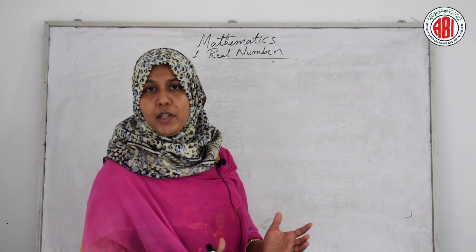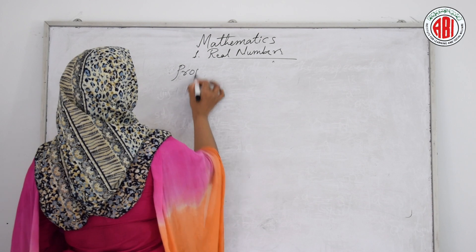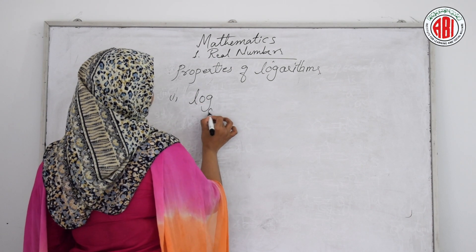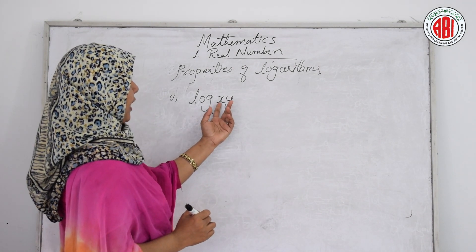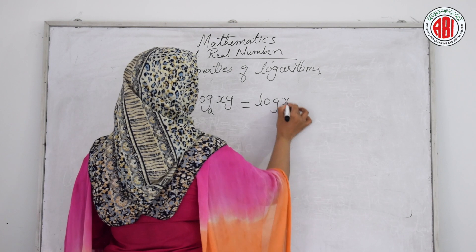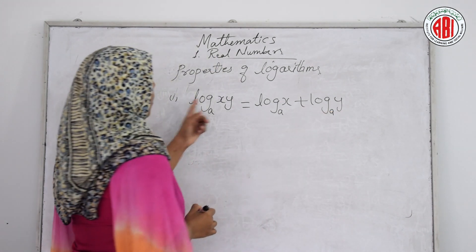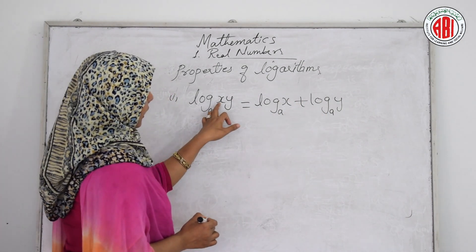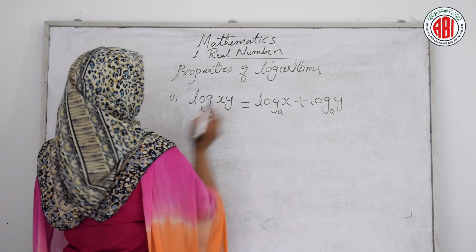Now we have properties of logarithms. The first one is: log base a of (x times y) — that is, two numbers x and y multiplied together — we can write as log x base a plus log y base a. So log(xy) base a equals log x base a plus log y base a. If it is in product form, you write the plus sign.